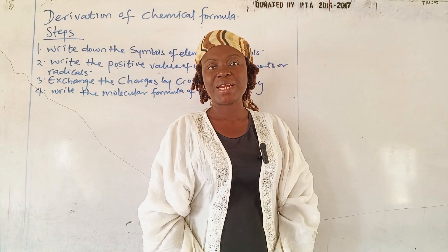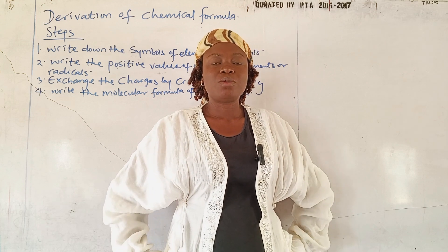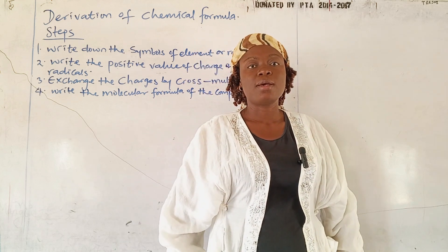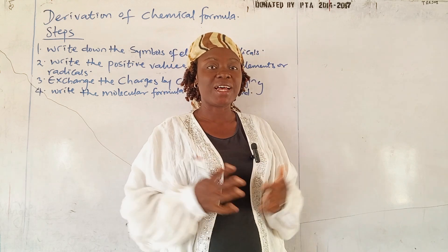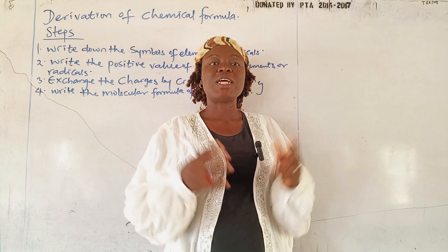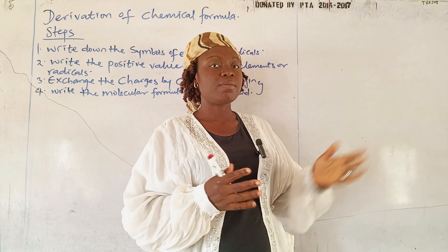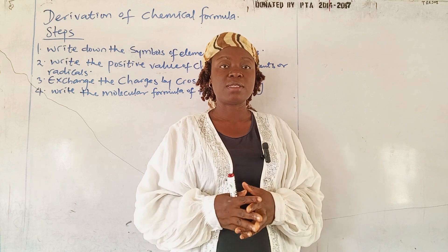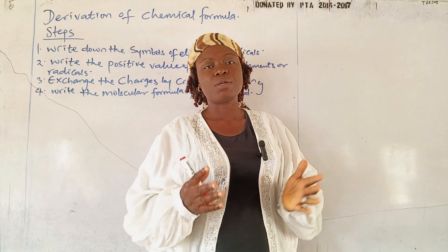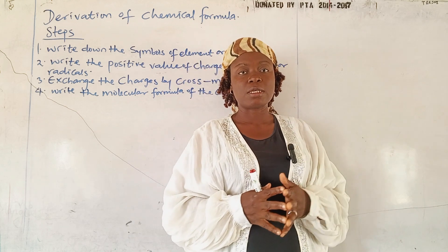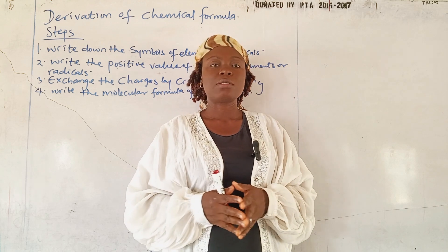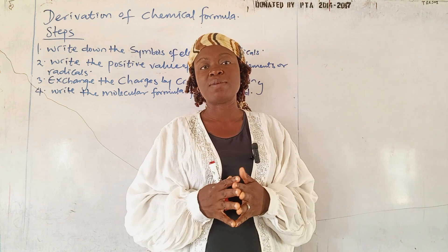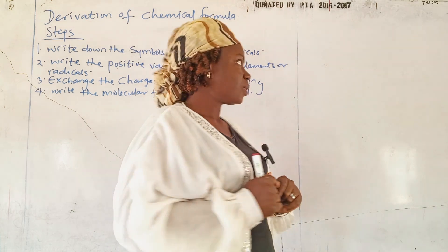Welcome to chemistry class. Today we'll be doing derivation of a formula using the elements. Most times students wonder how we write our chemical formula — it actually happens through the use of symbols from the elements. By now you should be familiar with your first 20 elements, even the first 30 elements — their symbols, atomic numbers, atomic masses, oxidation numbers and valency. I'll be showing us steps to derivation of a chemical formula and we are going to do some examples on the board.